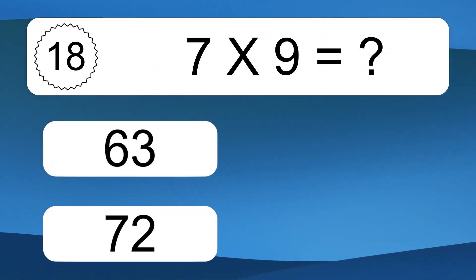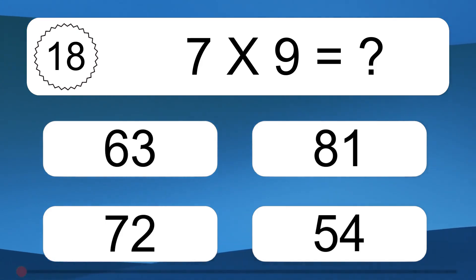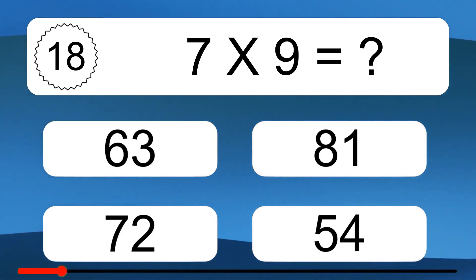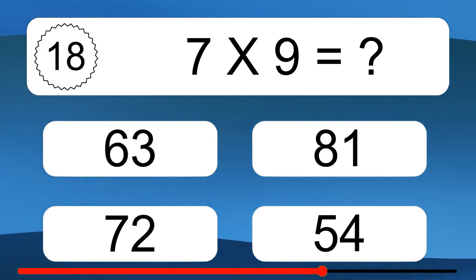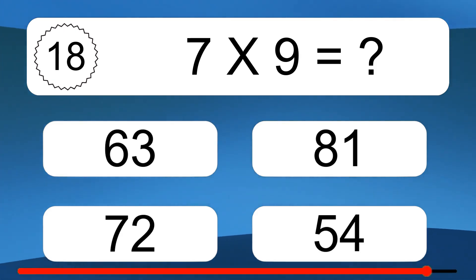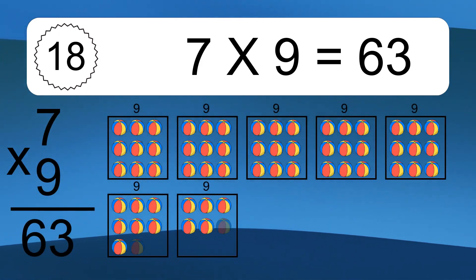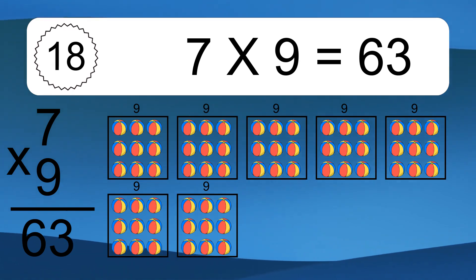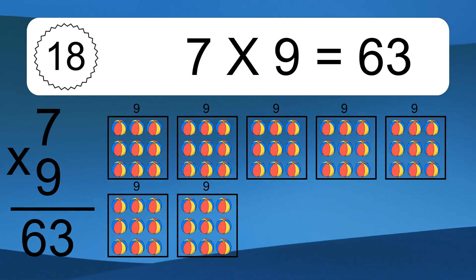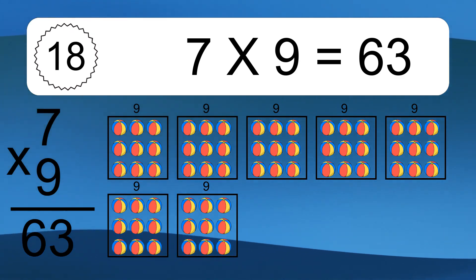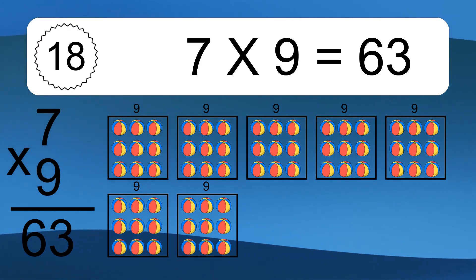7 times 9 equals what? 7 times 9 equals 63. We have 7 boxes, and each box has 9 colorful balls inside. If you count all the balls in all the boxes together, you will have 7 times 9 balls. This equals 63 balls.